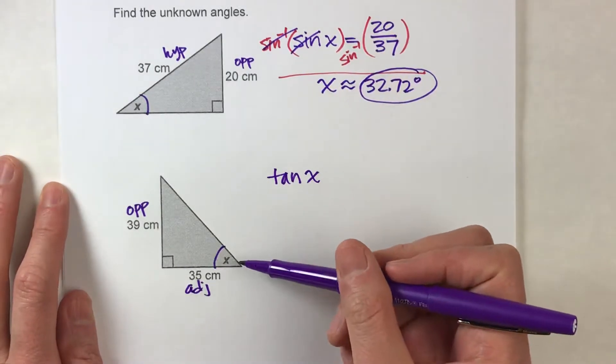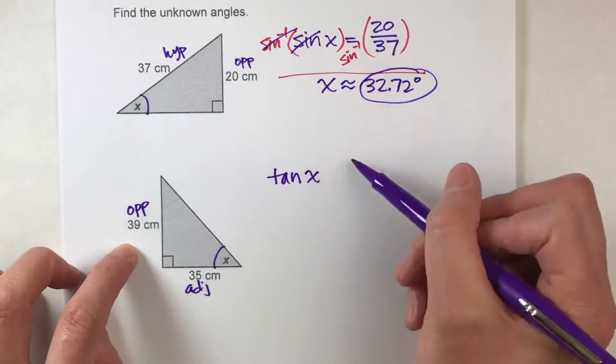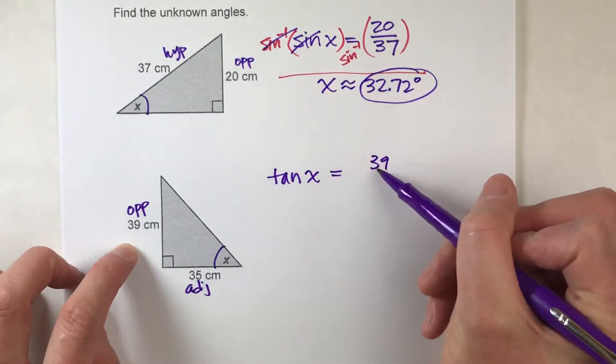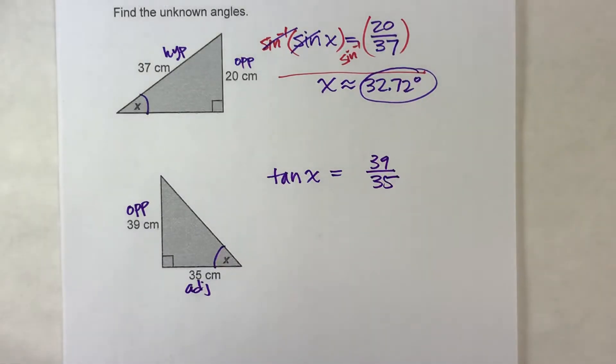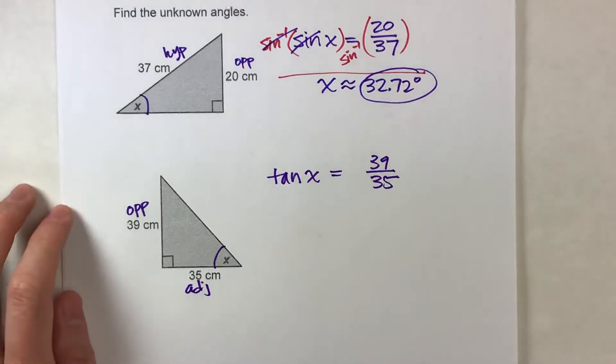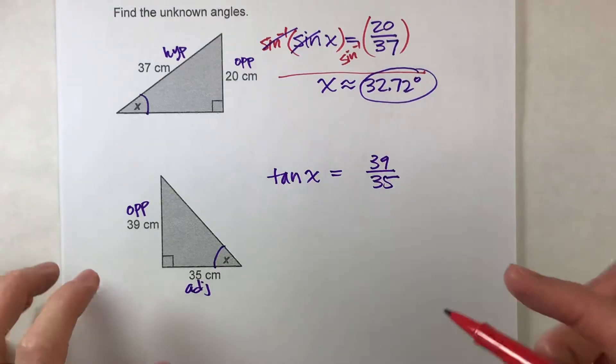So the tangent of the angle is equal to the opposite over the adjacent. Now, how do we figure this out? Well, just like last time, since we need to get x, we need to undo tangent.